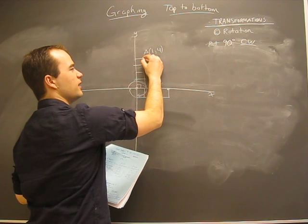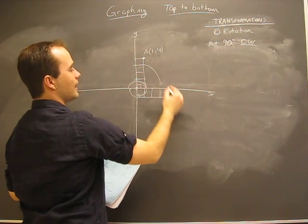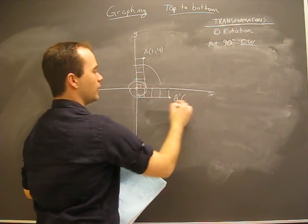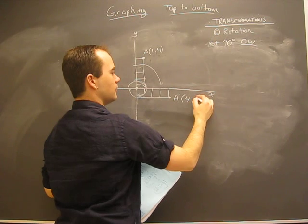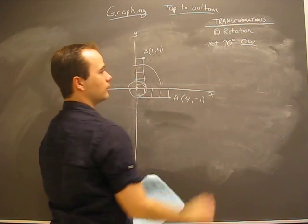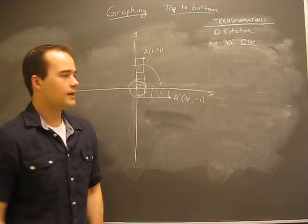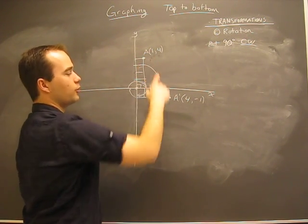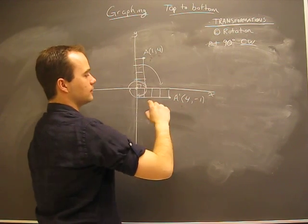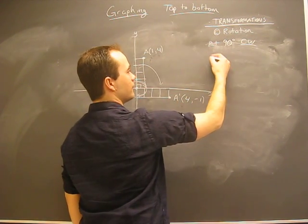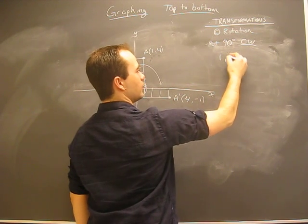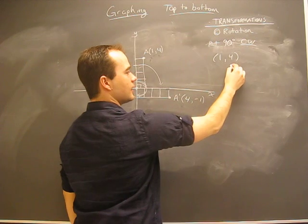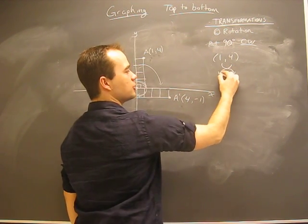So if this point was here before, now what is this edge piece? A prime. What is A prime? Well, A prime is now four and negative one. Well, what is the relationship we need to discover of what happened? If we're given a point A and we have to come to point A prime. The difference is we have this and we end up with this. We've taken the four and the one and we've switched their spots.